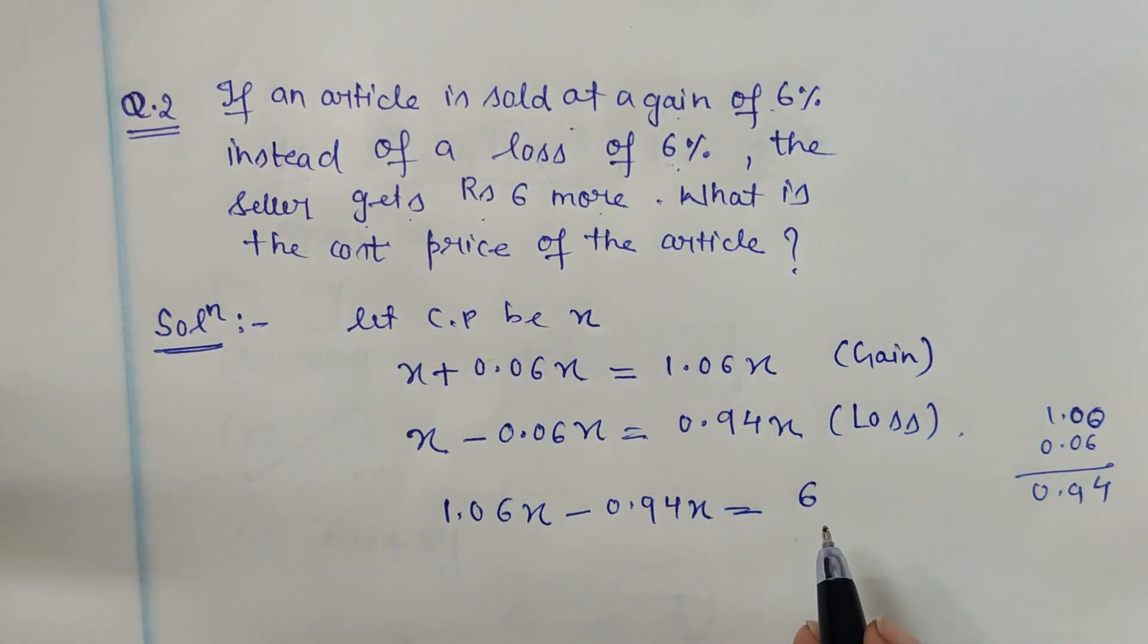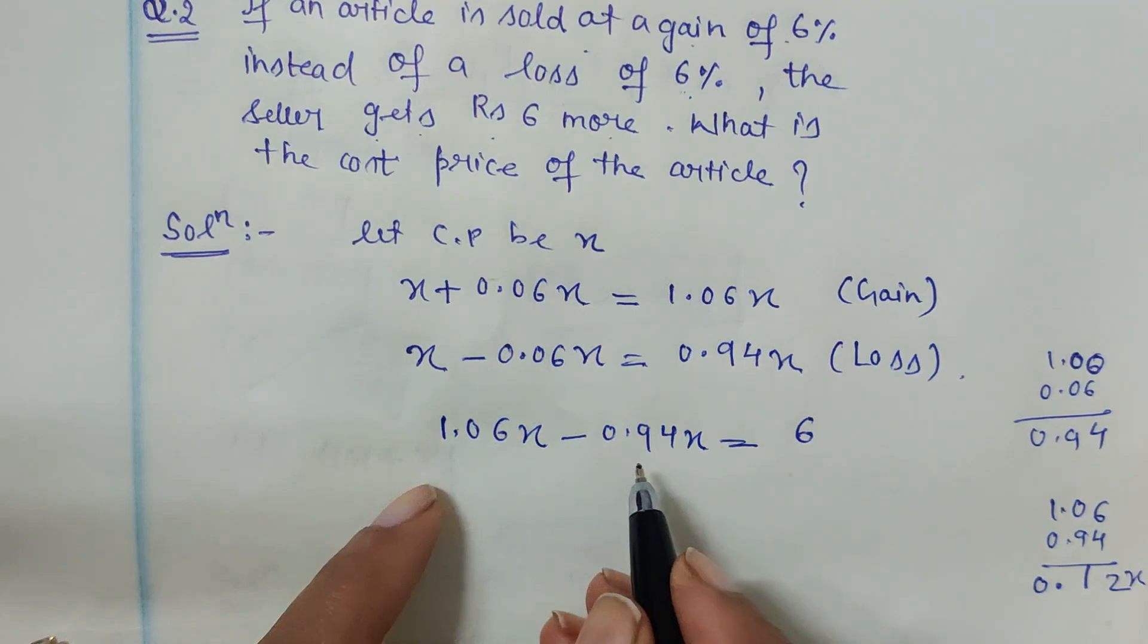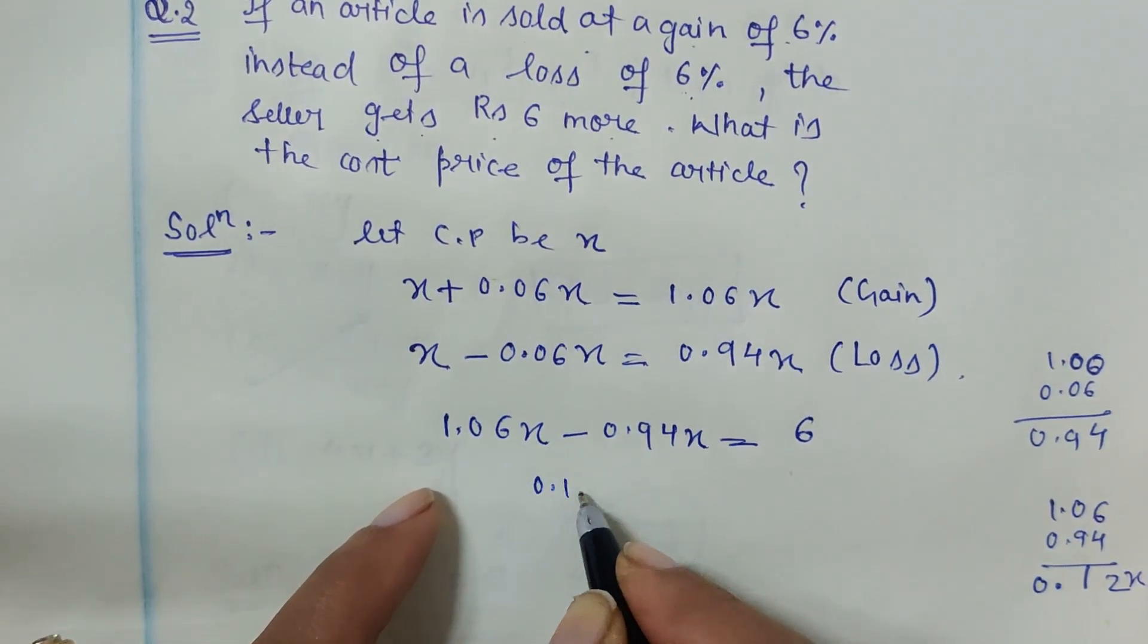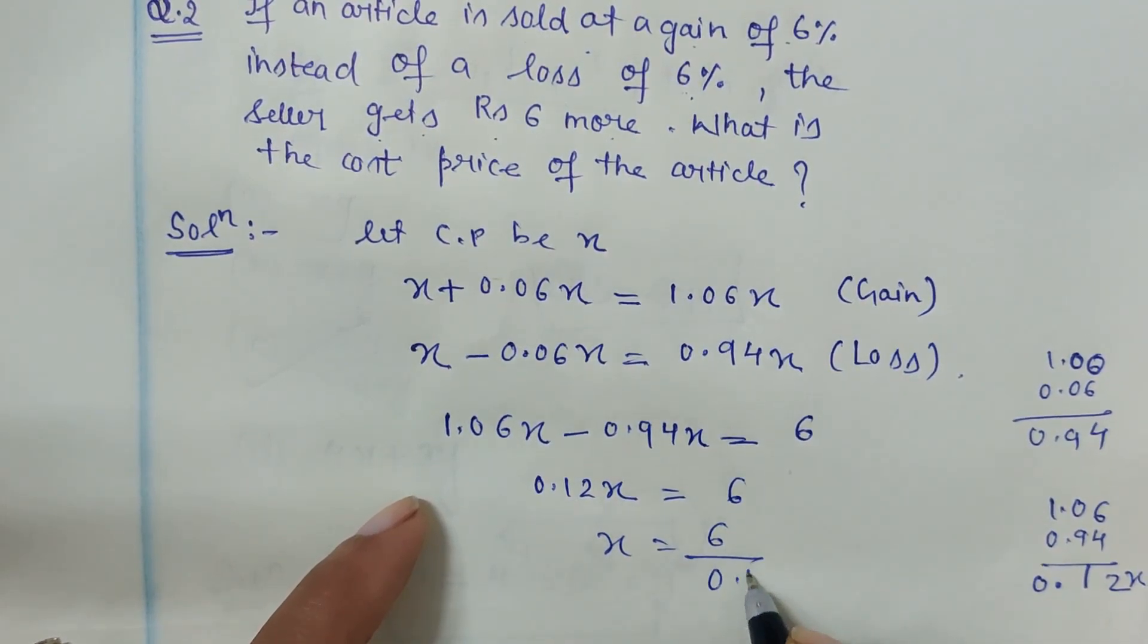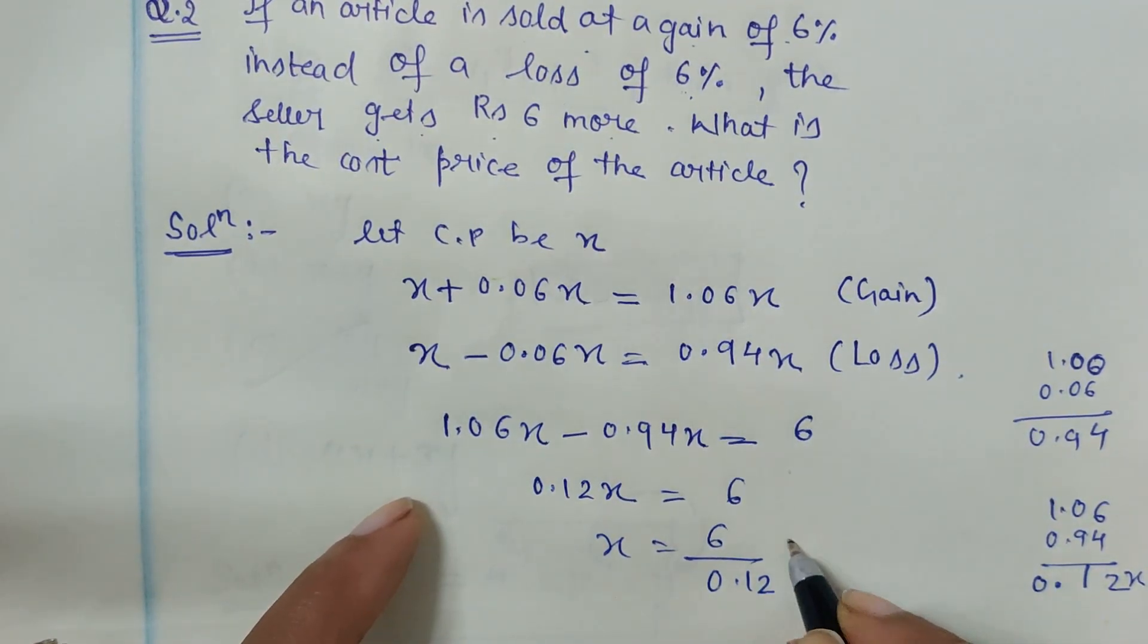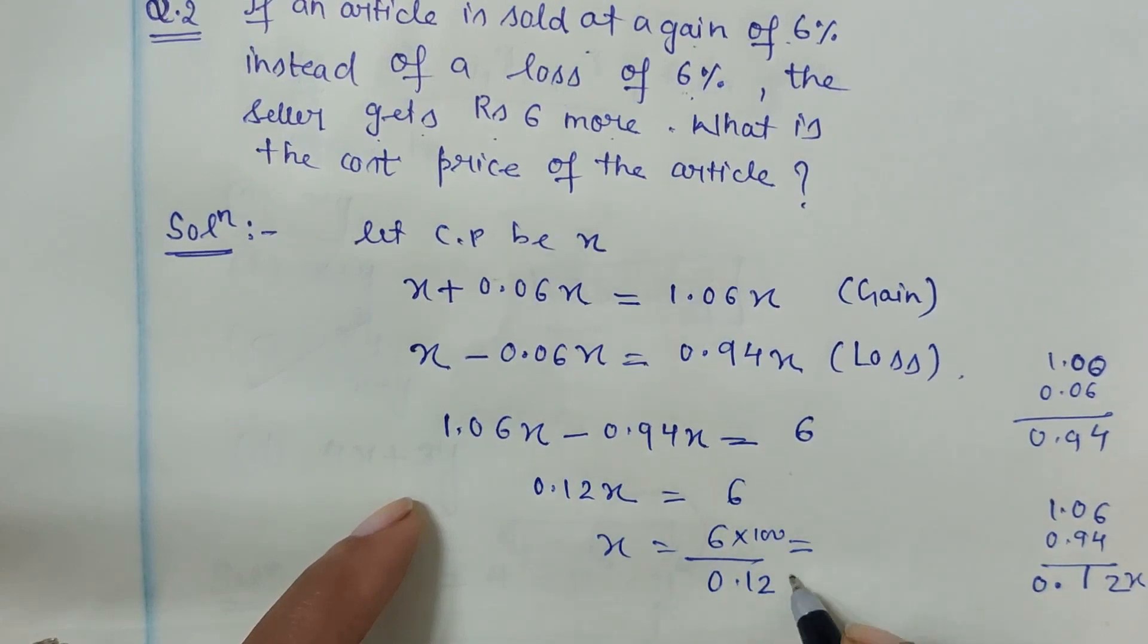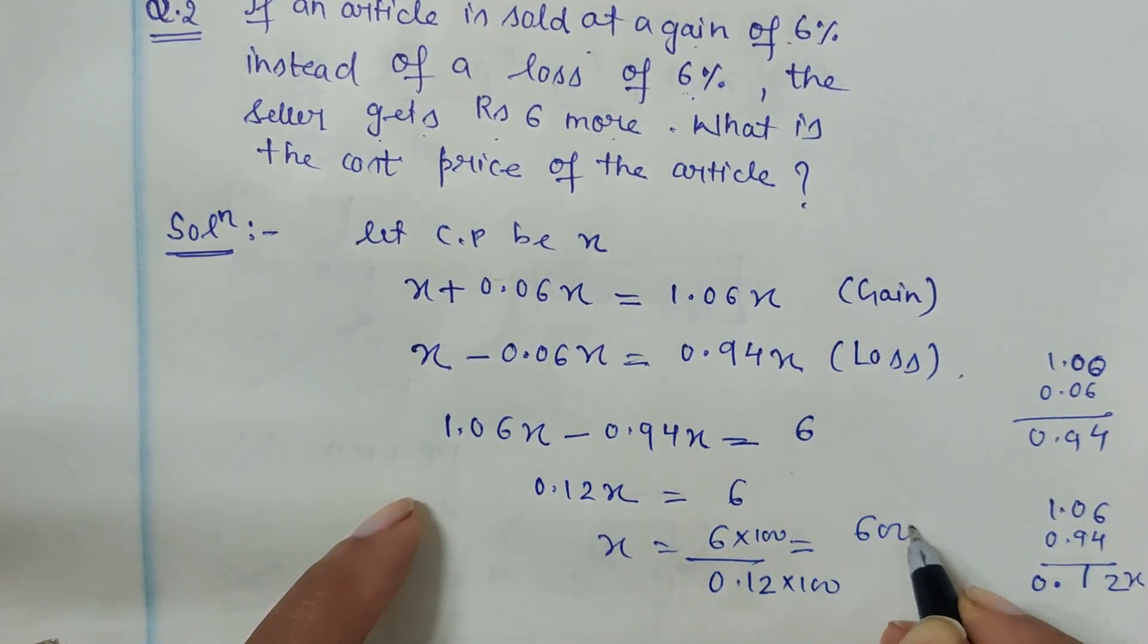So 1.06 minus 0.94 is 0.12X equals 6, and X is 6 upon 0.12. Just remove the decimals in numerator and denominator, so we get 600 upon 12. 12 fives is 60, that means the cost price is rupees 50.